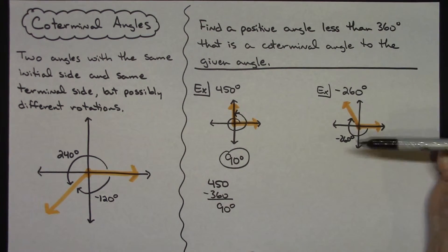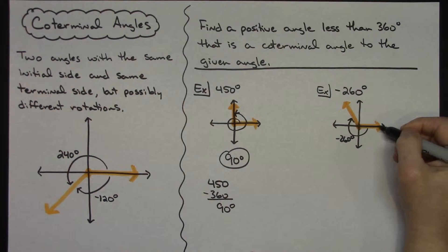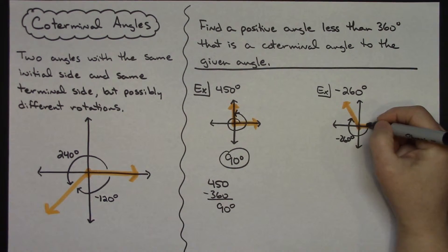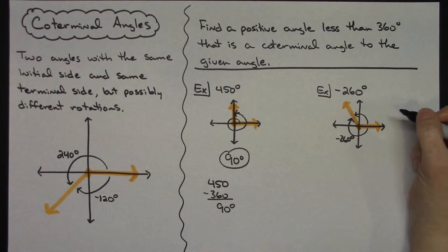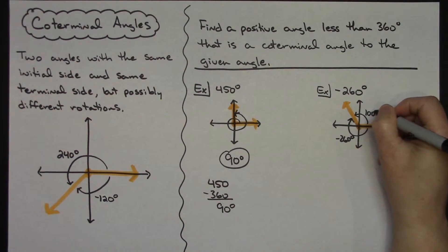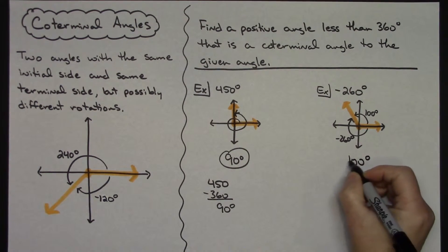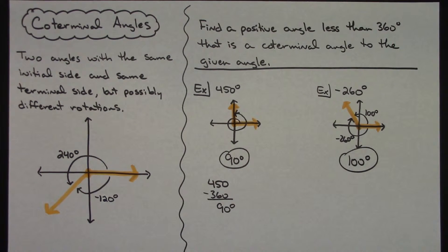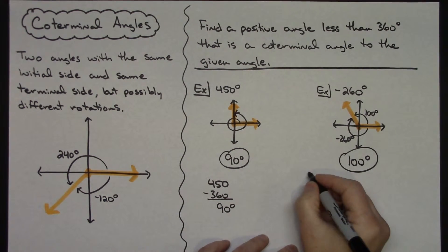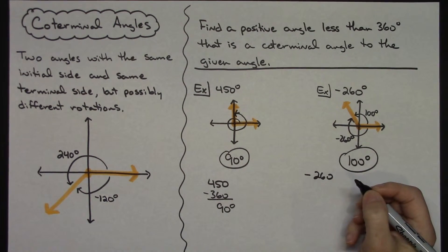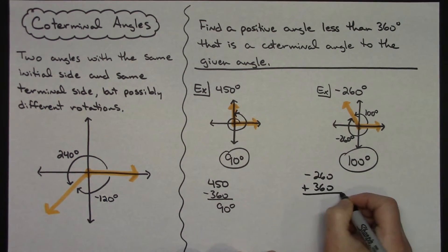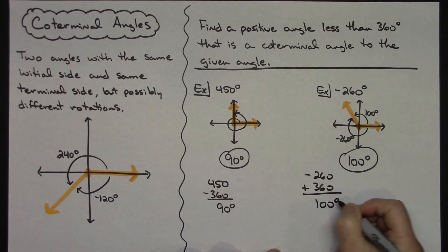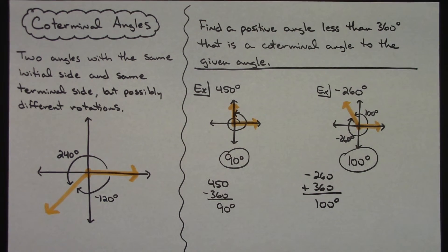I need a positive angle less than 360 that's co-terminal, so it has to have the same initial side and same terminal side. For this one we can add 360 degrees, which gives us 100 degrees. So the answer is 100 degrees. And if you didn't want to draw a picture every time, you can take negative 260 degrees and add 360 degrees to come up with 100.